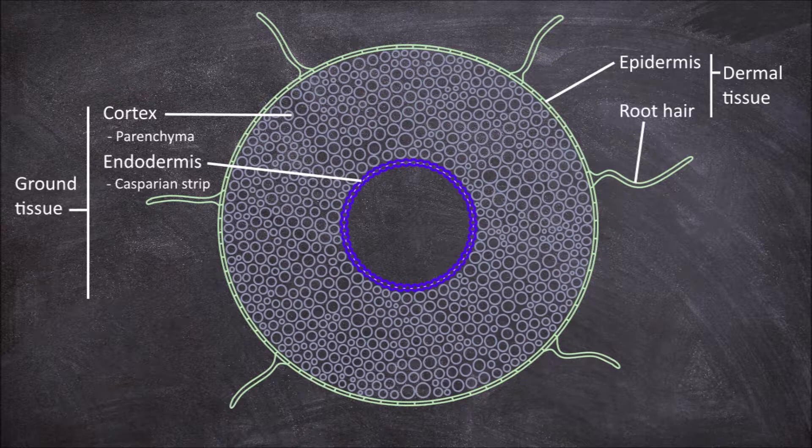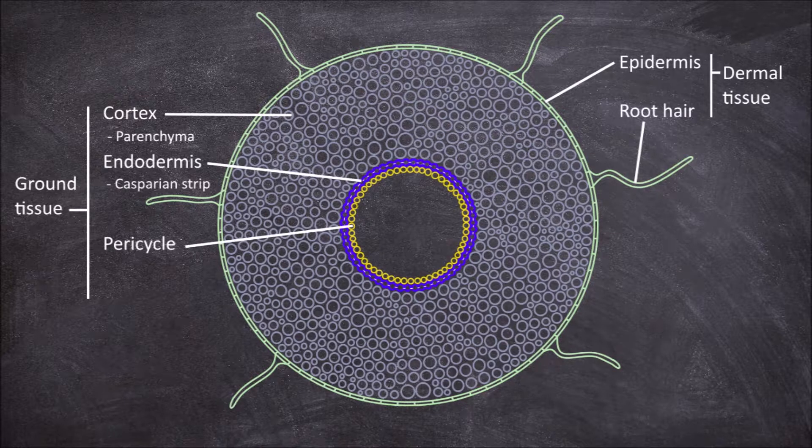The next layer in is the pericycle. The centre of the cell houses the vascular tissues of the root.